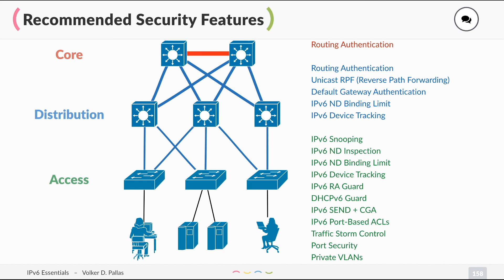Let's look at the recommended security features for a standard network. Following the Cisco guidelines, you have a core, distribution, and access layer. All clients and servers connect to access, the access switches connect redundantly to distribution, and then there is the core. In the core you should use routing protocol authentication, no matter what routing protocol you use. In the distribution layer you should also do routing authentication so nobody hacks into your network.